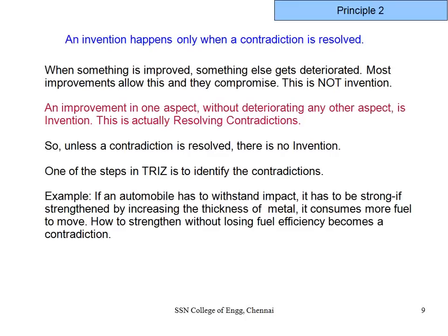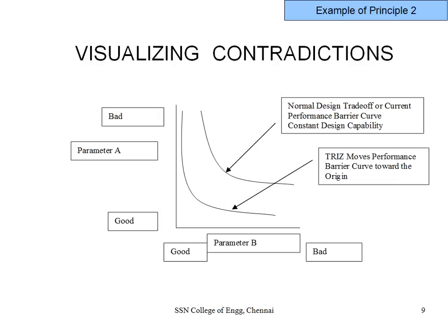For example, if an automobile has to withstand impact it must be strong. I can make it strong by increasing the thickness of metal, but increasing thickness naturally increases fuel consumption. Increasing strength by increasing metal thickness while decreasing fuel efficiency is not a real, innovative solution. How to strengthen without losing fuel efficiency is the contradiction — I must improve one without allowing the other to decrease.